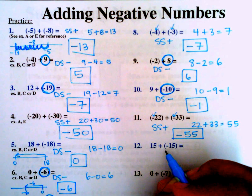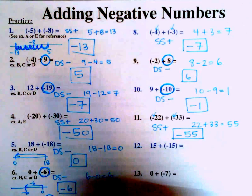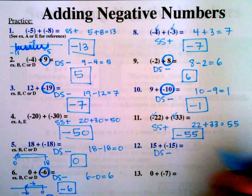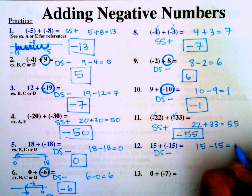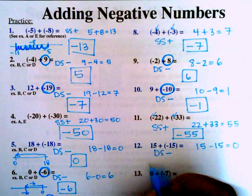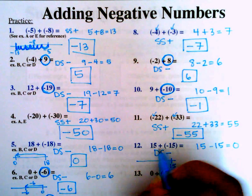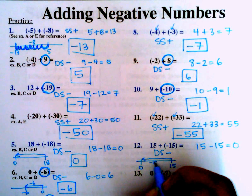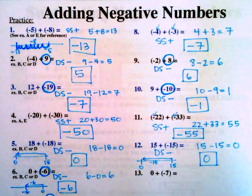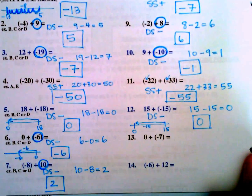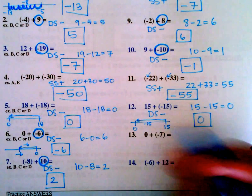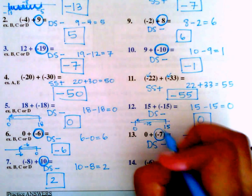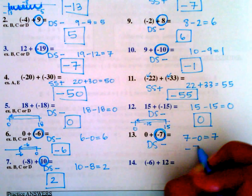Number 12: 15 plus negative 15. Different signs, so we subtract: 15 minus 15 equals 0. On a number line at 15, adding negative 15 takes us back to 0. Number 13: 0 plus negative 7. Different signs, subtract: 7 minus 0 equals 7. The larger number is negative, so the answer is negative 7.